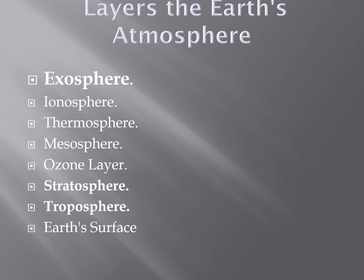Starting from the nearest to the earth's surface, the first layer is the troposphere. Then comes the stratosphere, the ozone layer, mesosphere, thermosphere, ionosphere, and the farthest from the earth's surface is the exosphere.